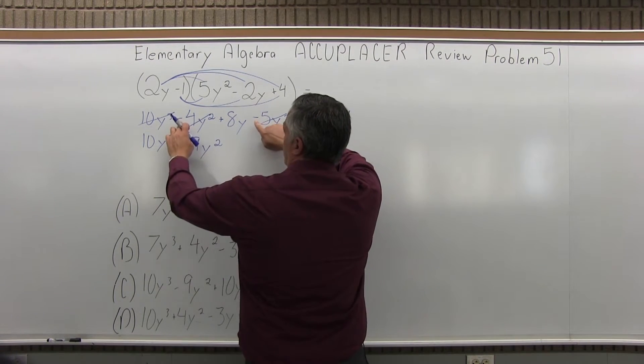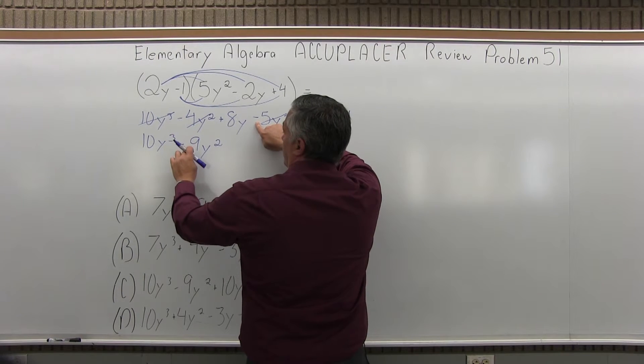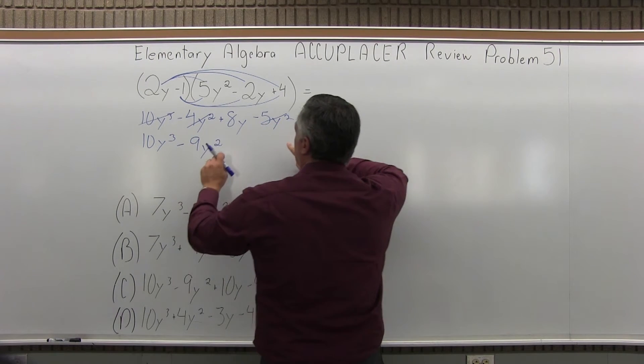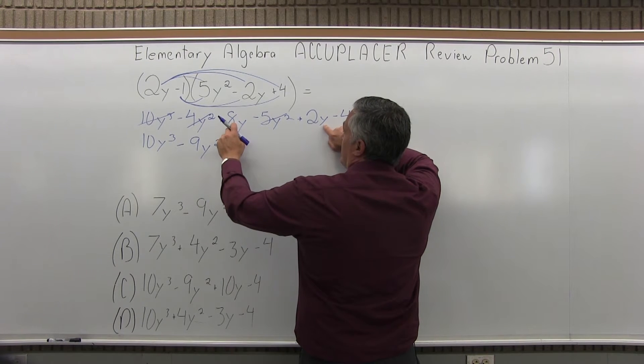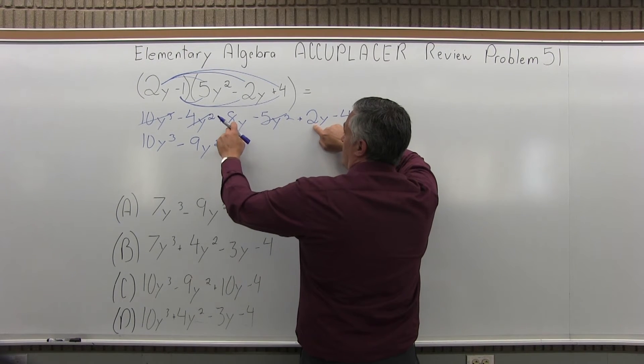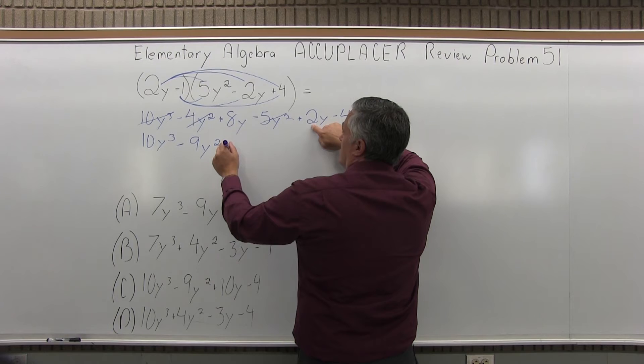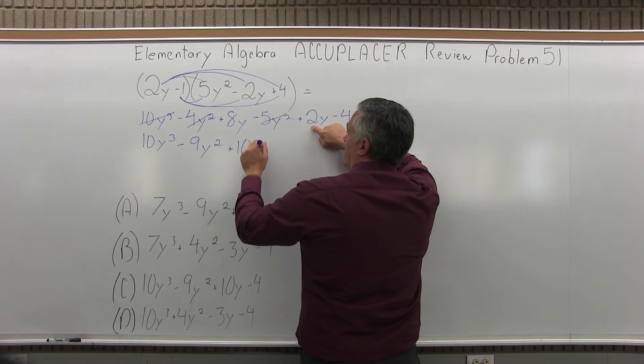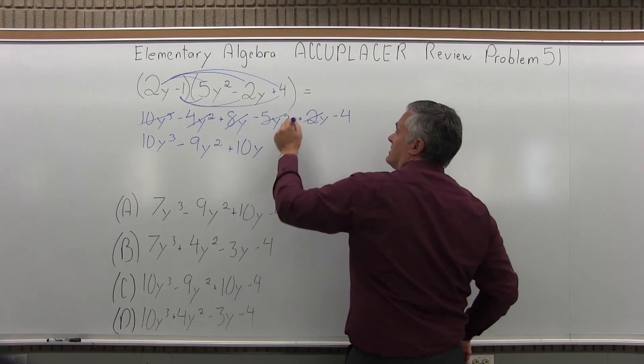Pay attention to the sign. Negative 4, negative 5 combined for negative 9. Now, just the y to the first powers. I have 8 of them in one spot, 2 in another. Positive 8, positive 2 go together for 10y to the first.